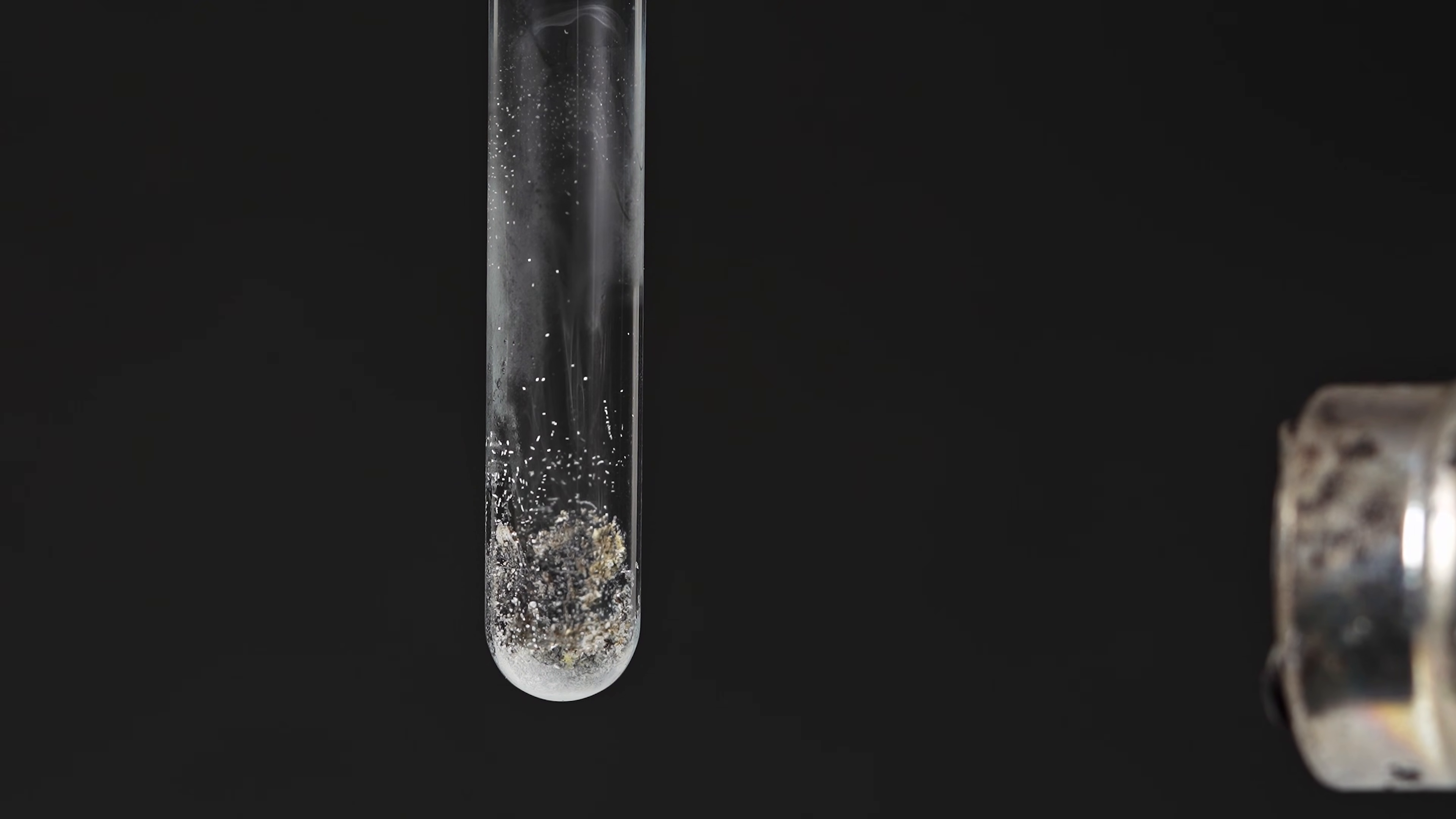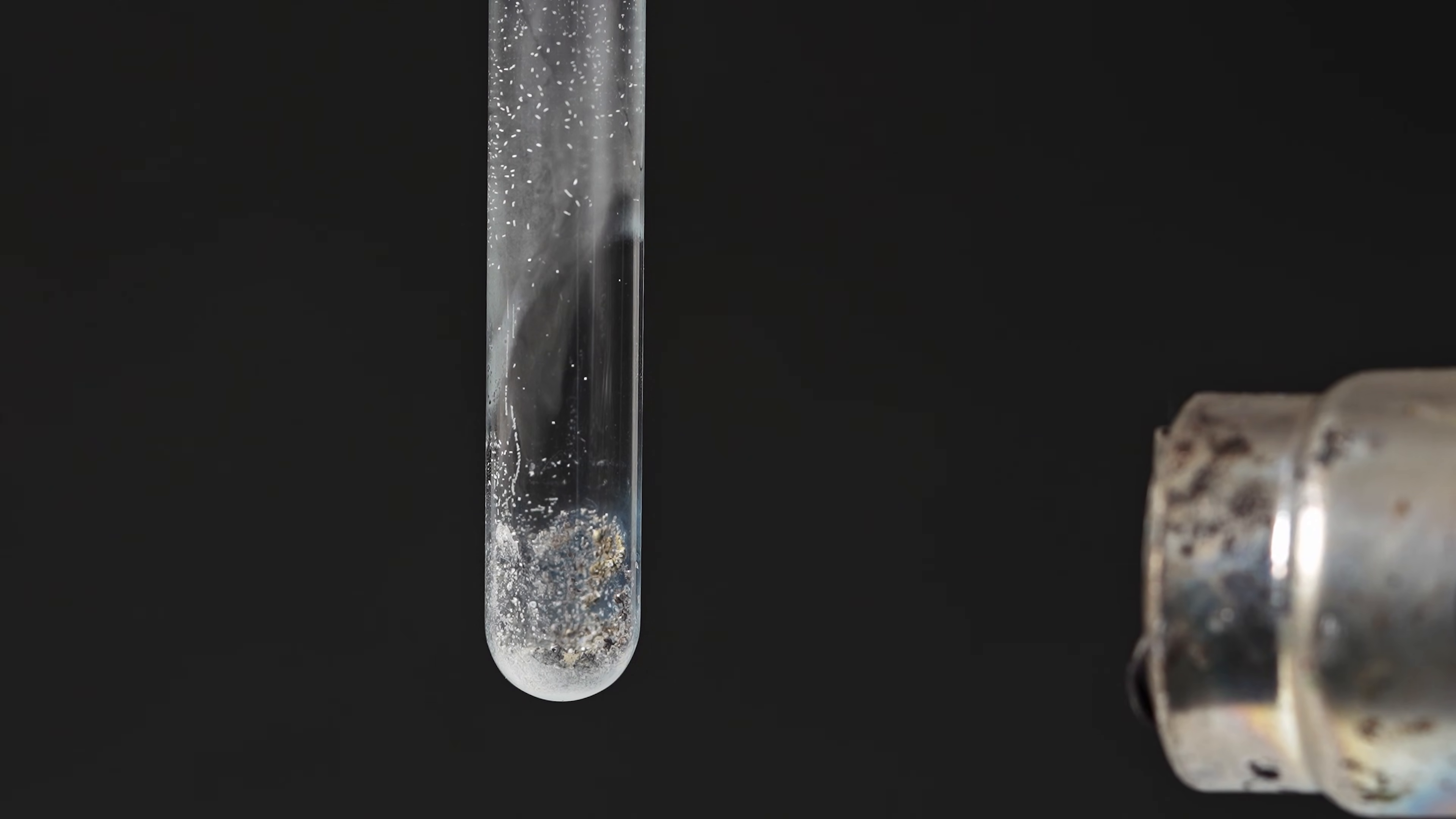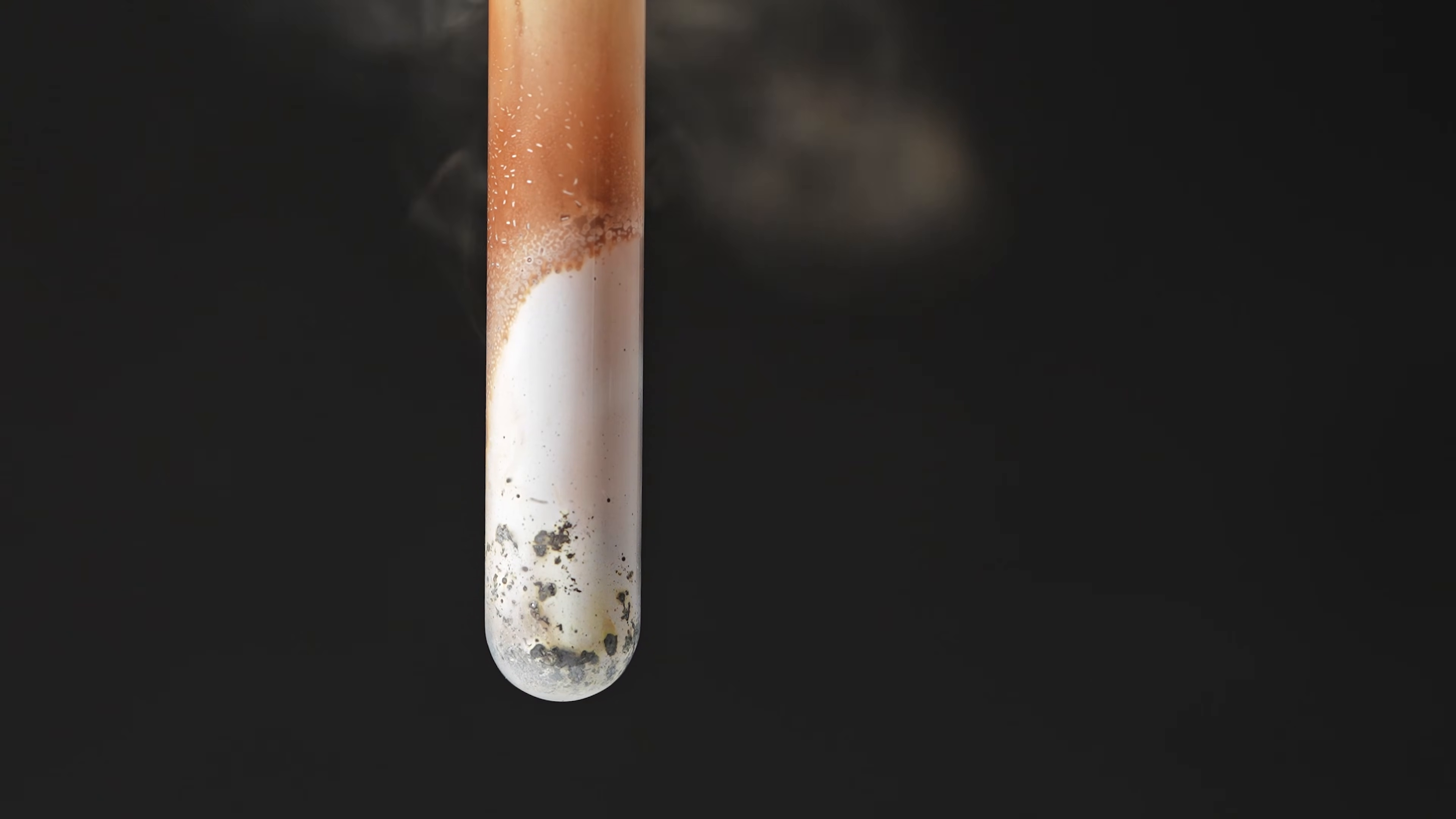However, vapors of sublimating xenon difluoride appeared, along with small crystals settling on the cooler part of the test tube. And just when I was about to stop heating, the reaction finally happened. The white deposit on the test tube could very well be mercury fluoride, but the brown color is characteristic of mercury oxide. What do you think? Write a thought in the comments.